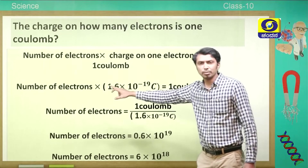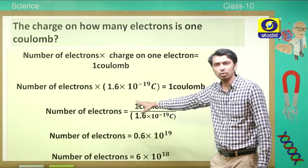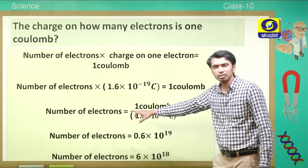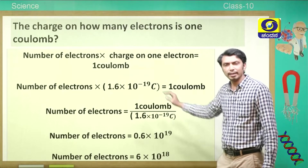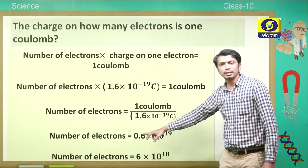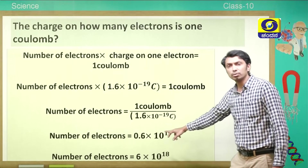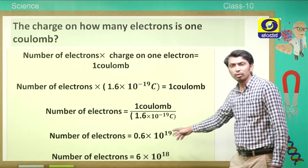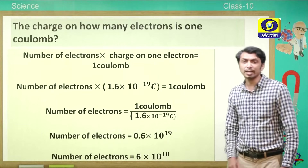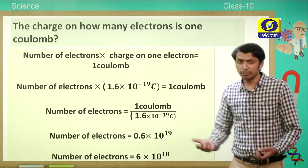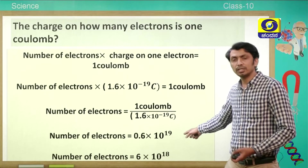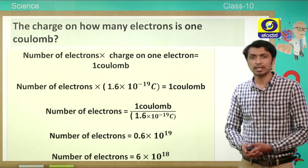Using the equation: number of electrons × charge on one electron = 1 coulomb, we substitute 1.6 × 10⁻¹⁹ coulomb as the charge on one electron. Transposing, we get the number of electrons equals 0.6 × 10¹⁹, which we adjust to 6 × 10¹⁸ electrons. So 1 coulomb is the charge collectively present in 6 × 10¹⁸ electrons.